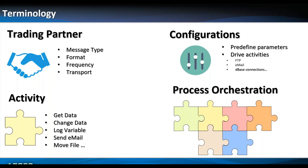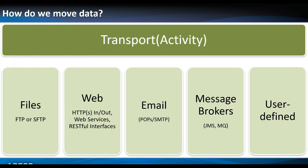Looking at transport first — how do we move the data? The transport is an example of an activity, just one of the many activities in the product. When we look at the transport activity, it's about getting data from our trading partner, internal or external. Are we using FTP, HTTP or web services, email, or message brokers like Java Message Services or MQ? If you have something specific to your organization, Composer is extensible — you can add your own activities, not just transport, but any type. It's just a 3GL program that we can wrap up and make known to Composer.